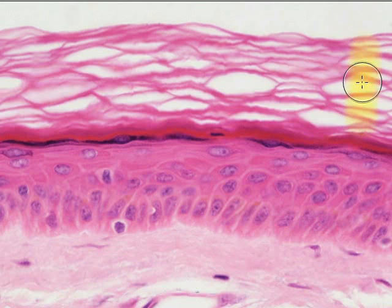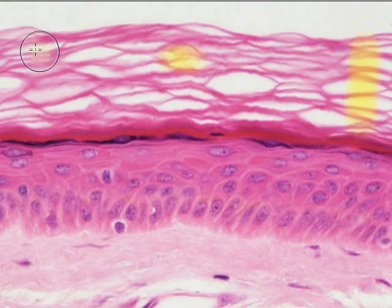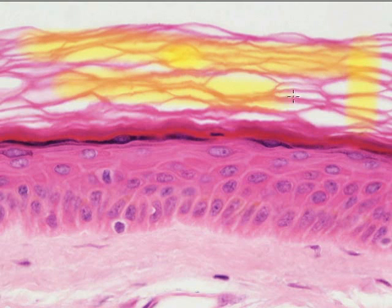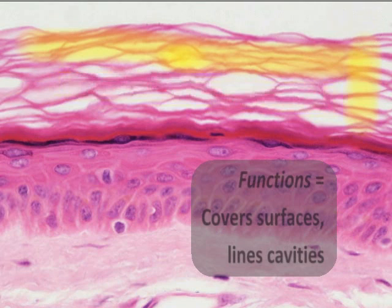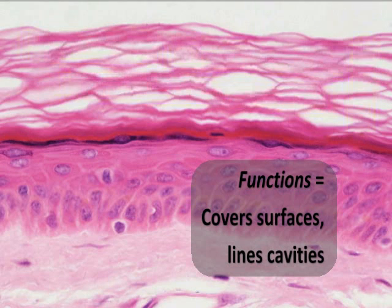Strata means layers, and we see the very flat layers of our squamous epithelial tissue covering surfaces, lining the interior of cavities.